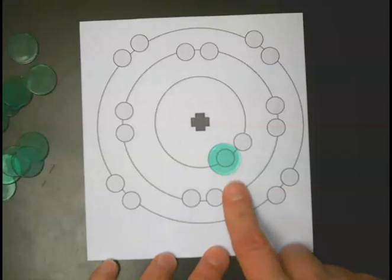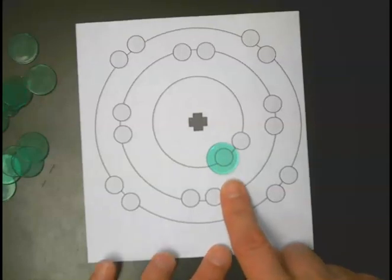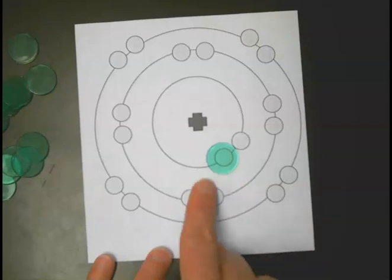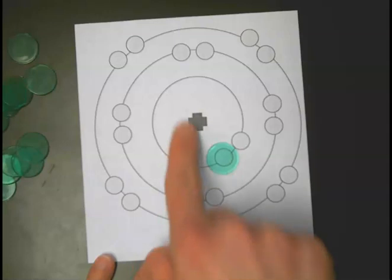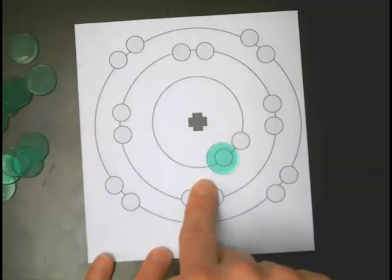We always have valence electrons—valence electrons is always one or bigger. Core electrons are any electrons between the valence shell and the nucleus. In this case, there's nothing in between, so we have no core electrons.